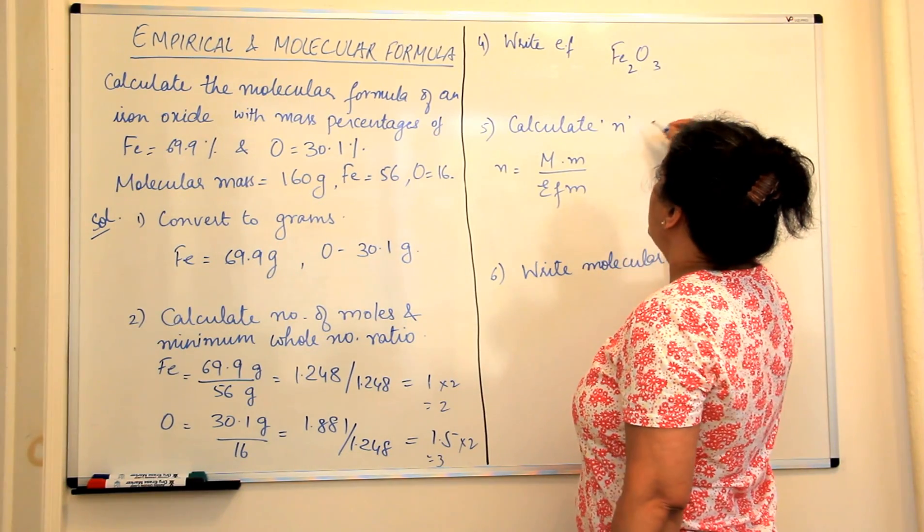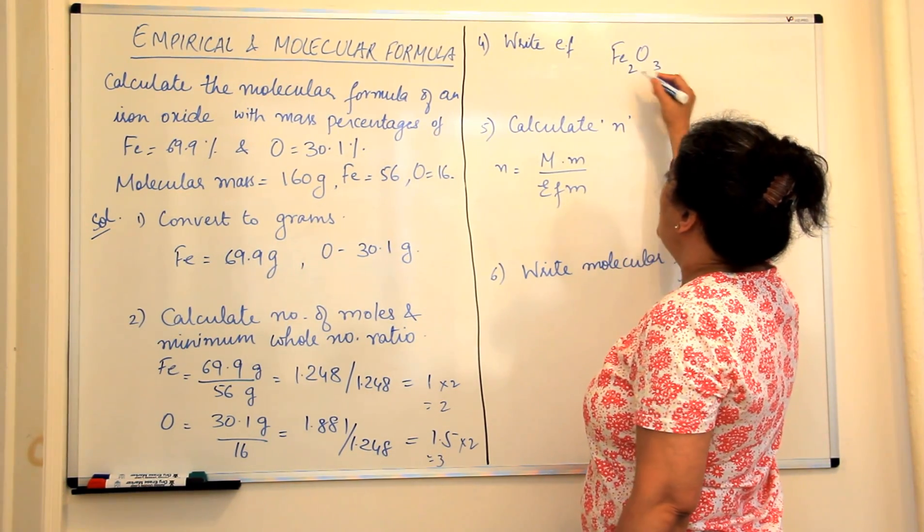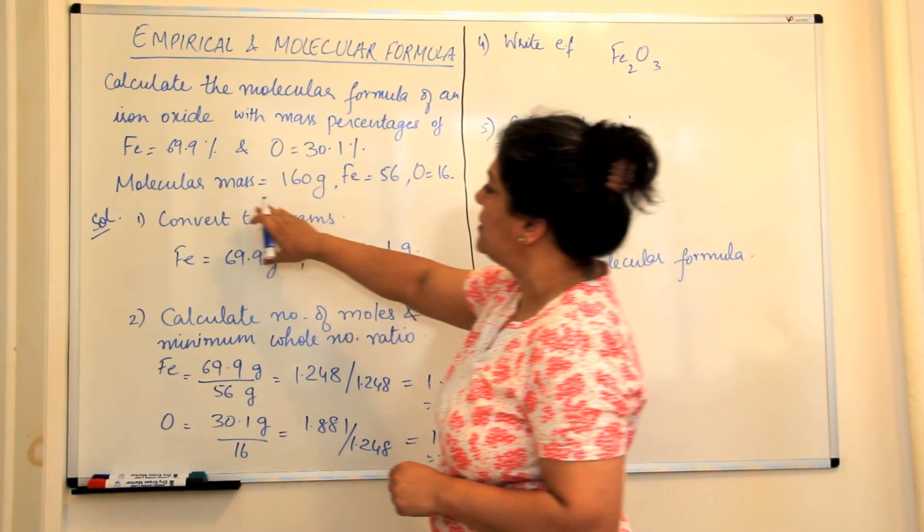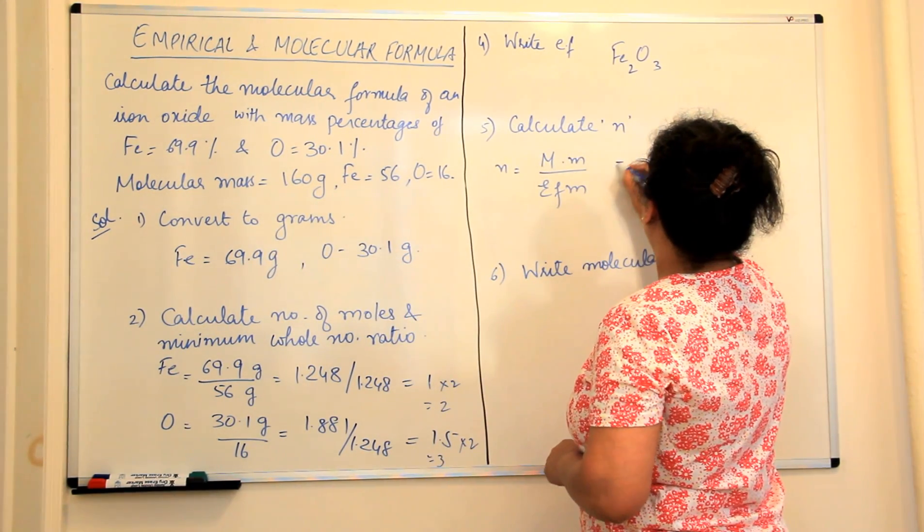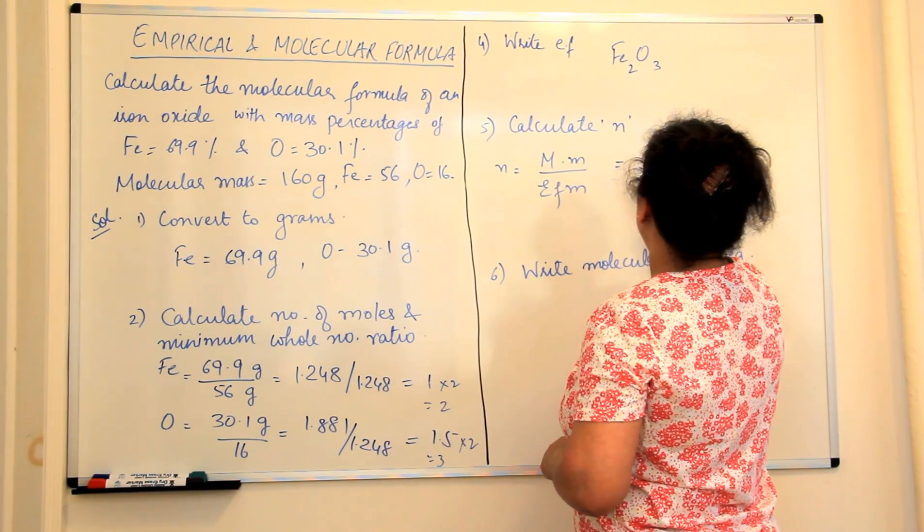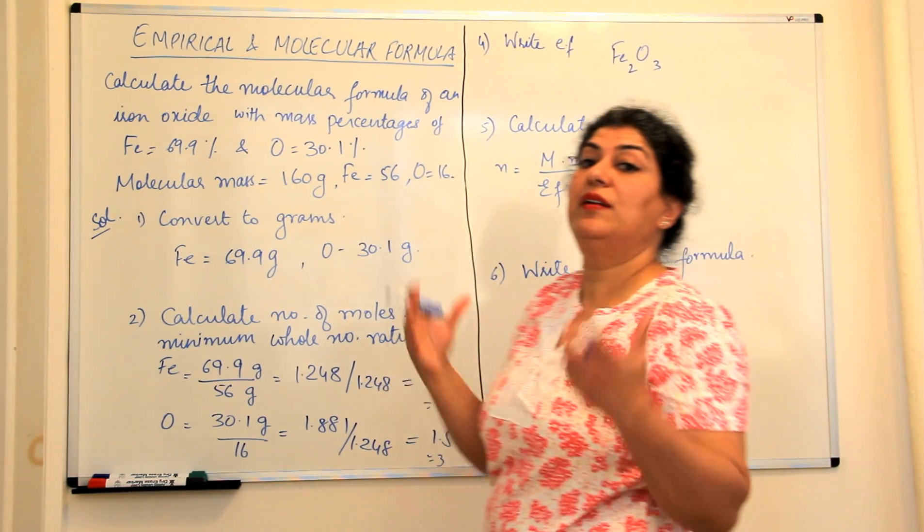So you have to calculate N. In order to calculate N, you should have the molecular mass. The molecular mass is given to us is 160. So this is 160 and you have to divide it by the empirical formula mass.